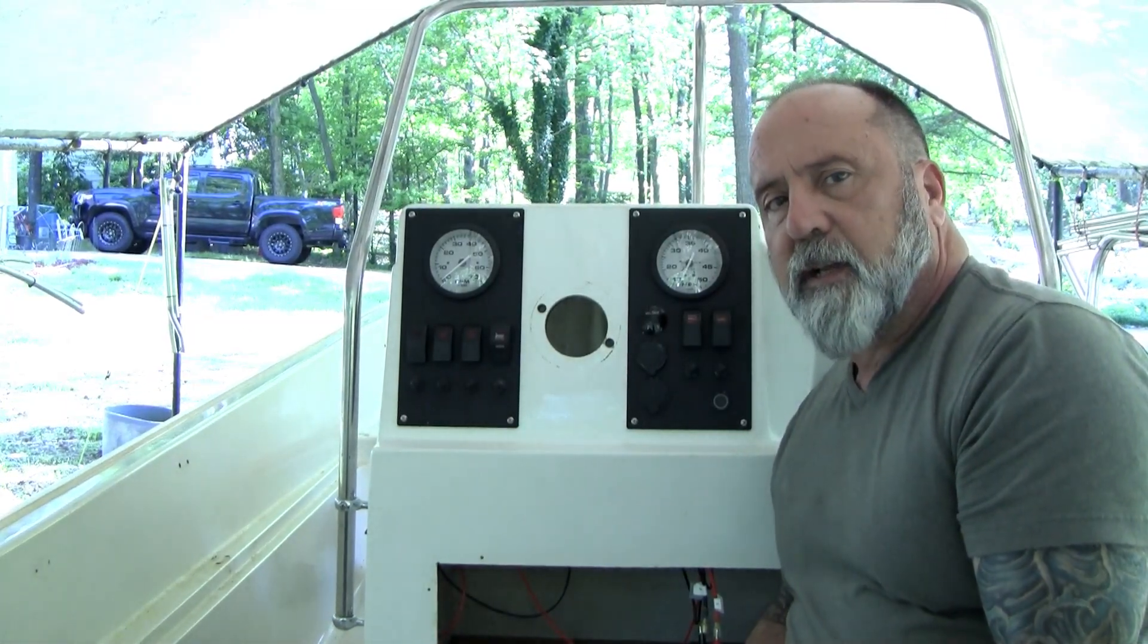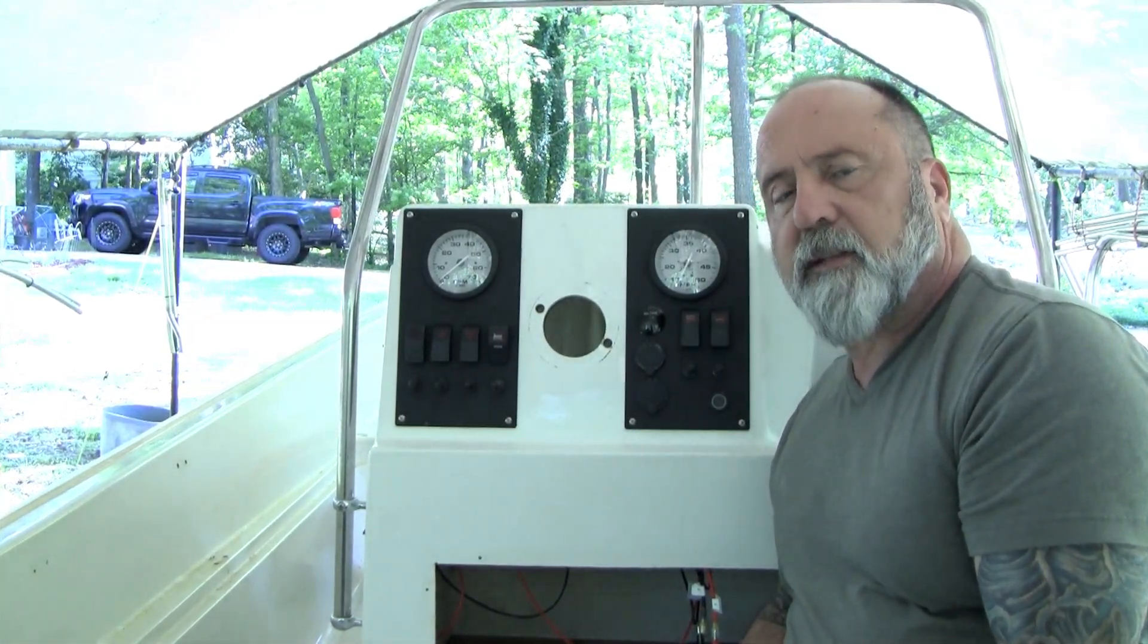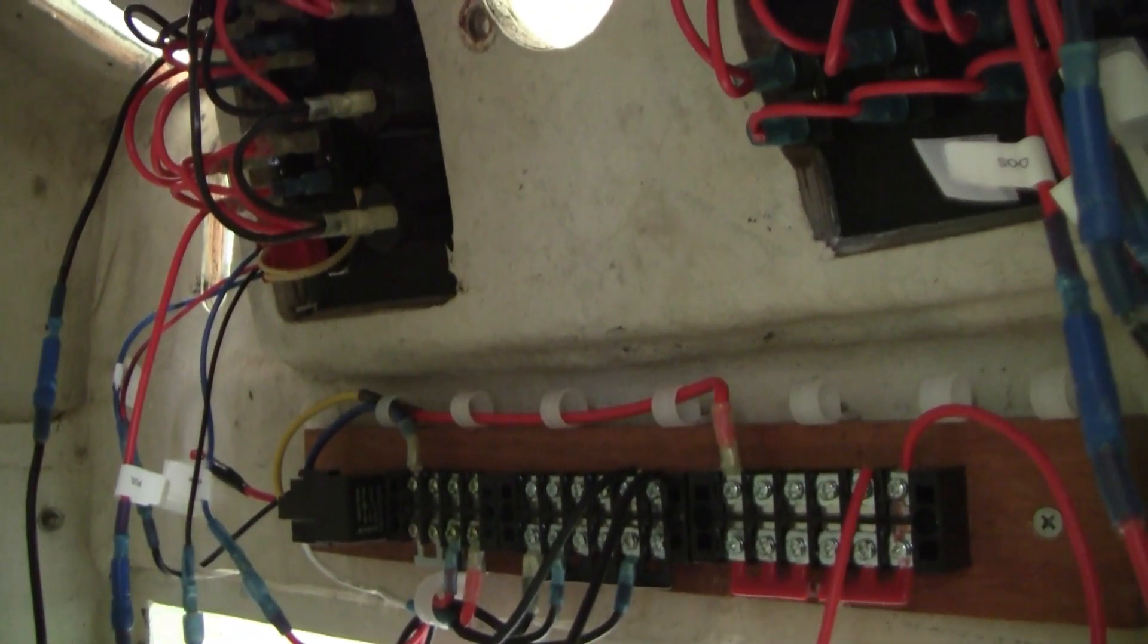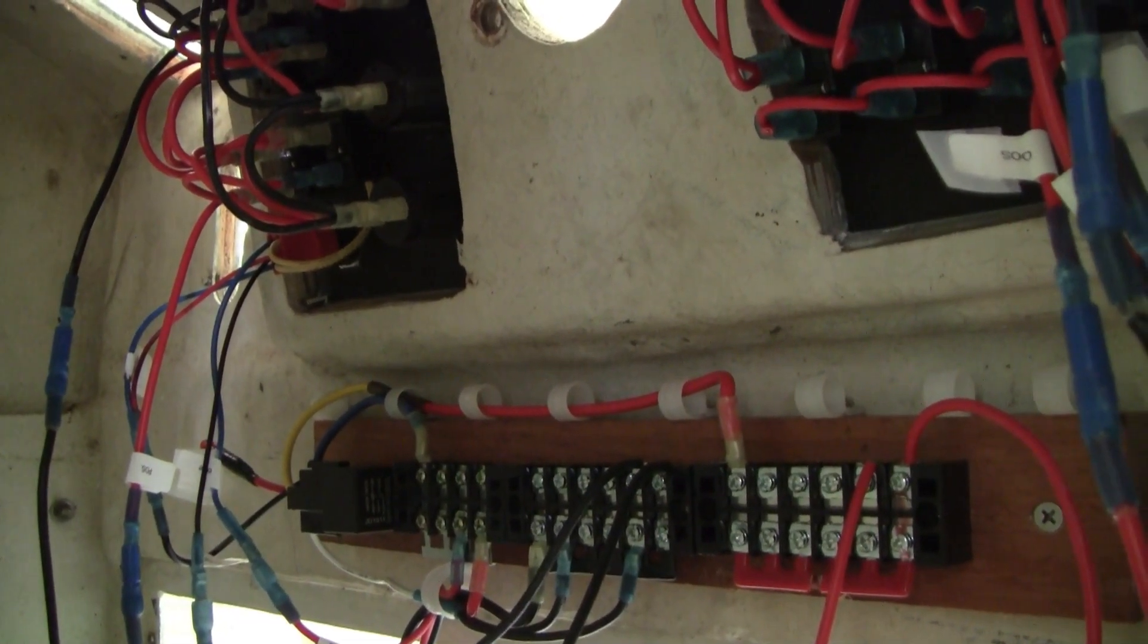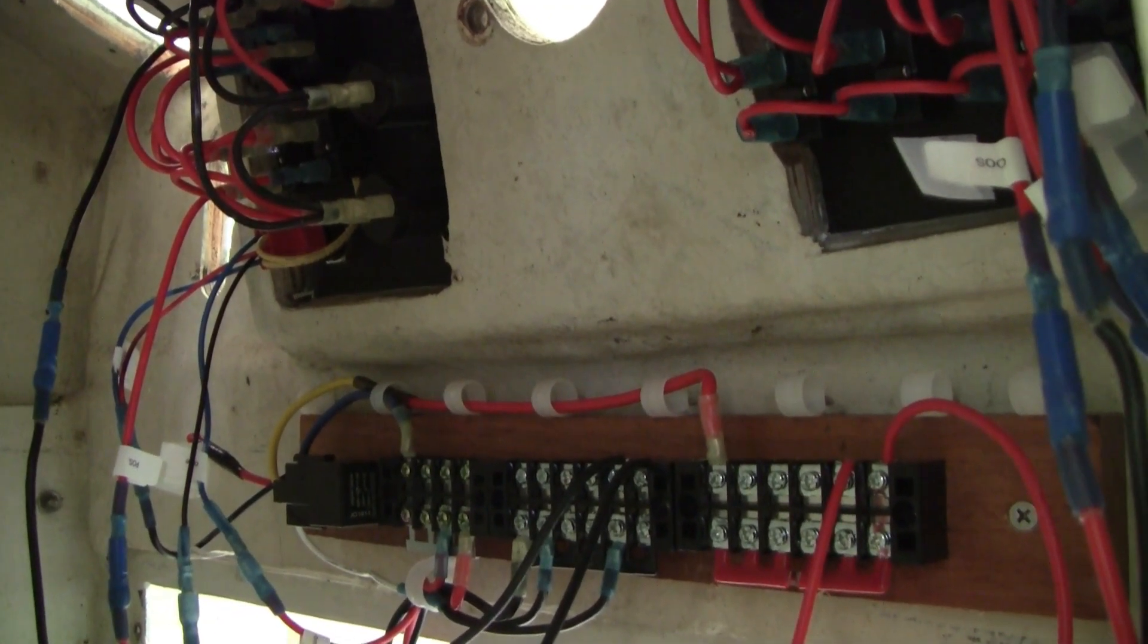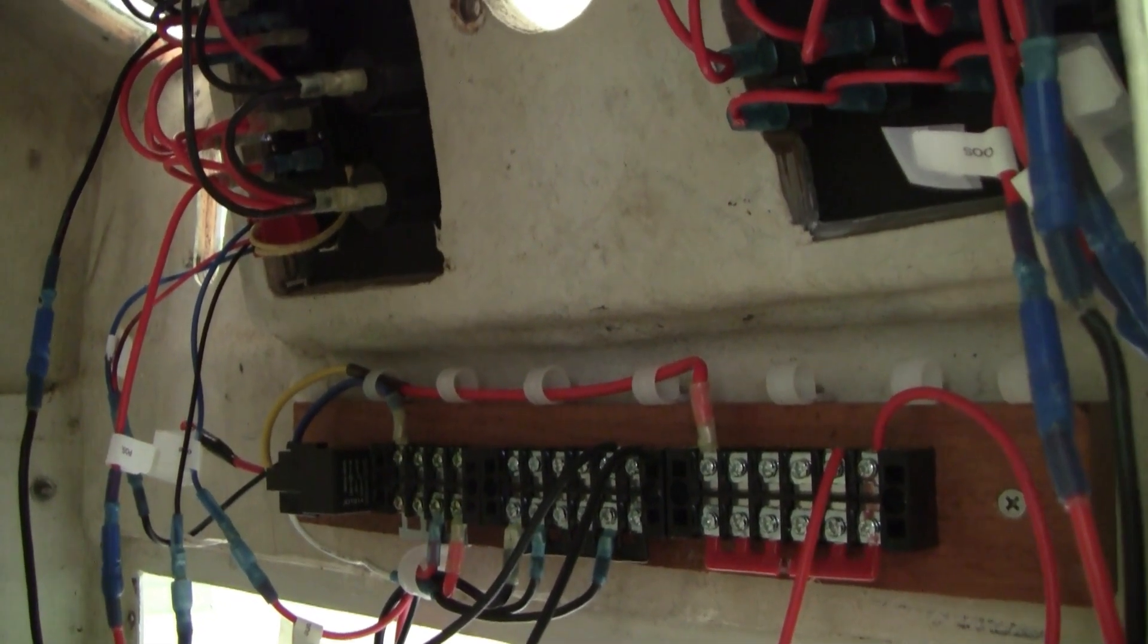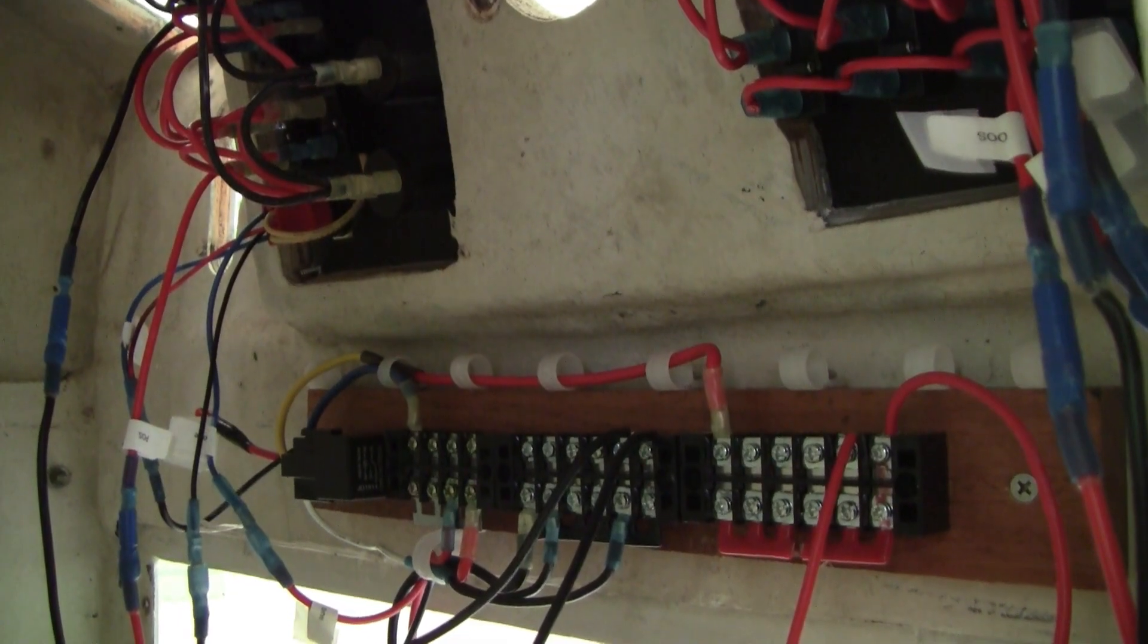So let me give you a shot of what it looks like on the inside. There's the two panels, there's a distribution panel. It's got a steady DC feed in and then a switch. The one on the right, the red one on the right is switched. So we'll be doing some wiring on this.